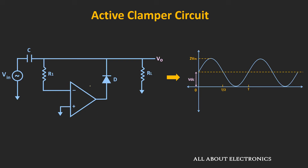This will become clear during the analysis of this circuit. For the clamper circuit, we know that the RC time constant of the circuit should be much larger than the time period of the signal. So during the analysis, we will assume that the RC time constant is much larger than the time period of the signal. With this assumption, let's analyze the circuit.